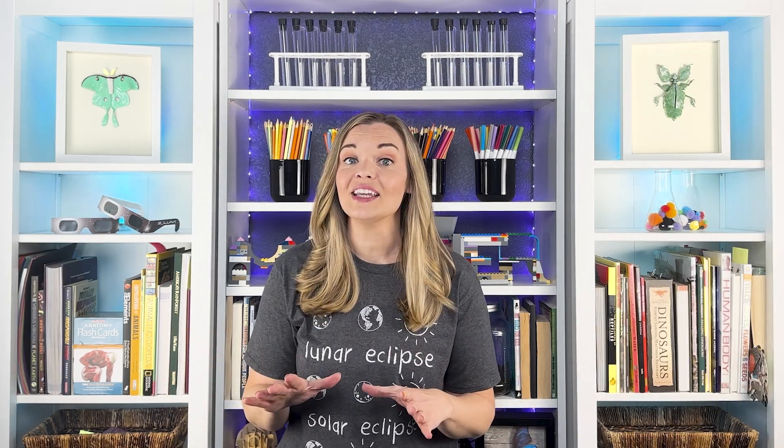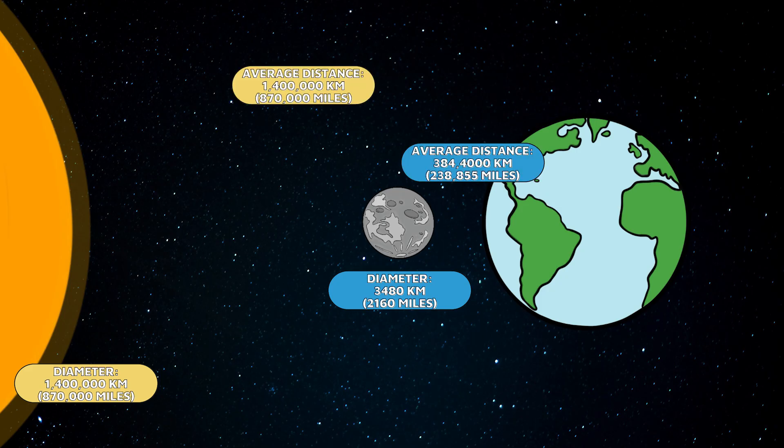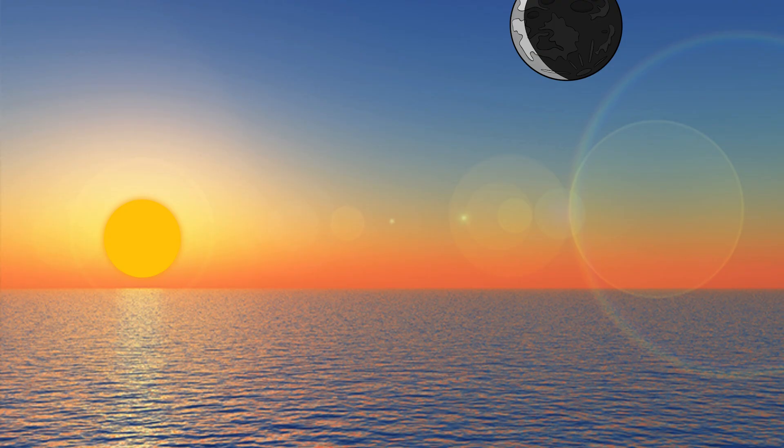A solar eclipse happens when a new moon moves between the earth and the sun, blocking some or all of the sun's rays from reaching the earth. We know that the sun is way bigger than the moon, so how is this possible? It just so happens that even though the sun is 400 times wider than the moon, it's also on average 400 times farther away, which means that when we view them from earth, the two objects appear the same size.